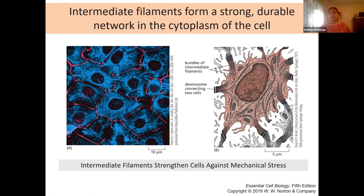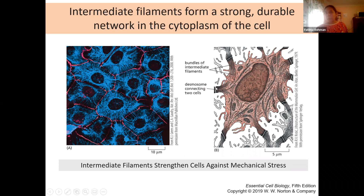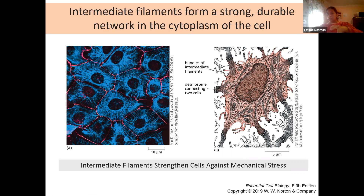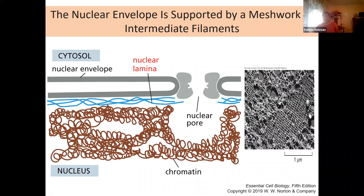Intermediate filaments create a very strong, durable network throughout your cells that helps the cell withstand significant mechanical stress without rupturing. These networks are not in isolation — they are connected to plasma membranes at specific anchor points to maintain structure in place. They can even connect two cells together in structures called desmosomes, creating large bundles that split off into long networks within and between cells.